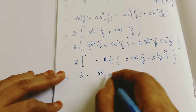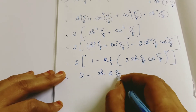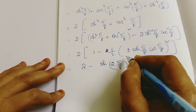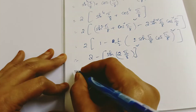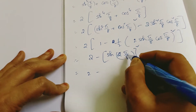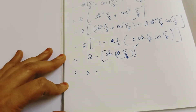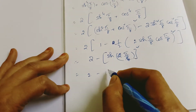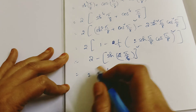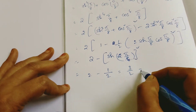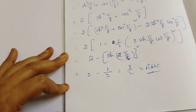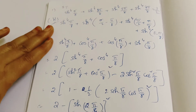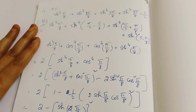So we have 2 × [1 − (1/2)·sin²(π/4)]. The value of sin(π/4) = 1/√2, and (1/√2)² = 1/2. So this becomes 2 × [1 − (1/2)·(1/2)] = 2 × [1 − 1/4] = 2 × 3/4 = 3/2. This is RHS. That's how to find this type of answer — it's an easy process.